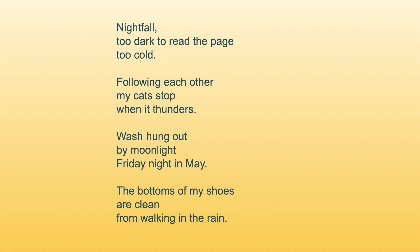This example does incorporate elements of the natural world — nightfall, cats, thunder — but it also includes man-made things: pages, the wash hung out, and shoes. There's a sense of meditating on a moment in time, and there are vivid images. To interpret this poem, we might start by finding those spaces where the reader can step into the poem's logic, as we did with Basho's work. There may not be specific cutting words here, but there are plenty of gaps that the reader must fill.